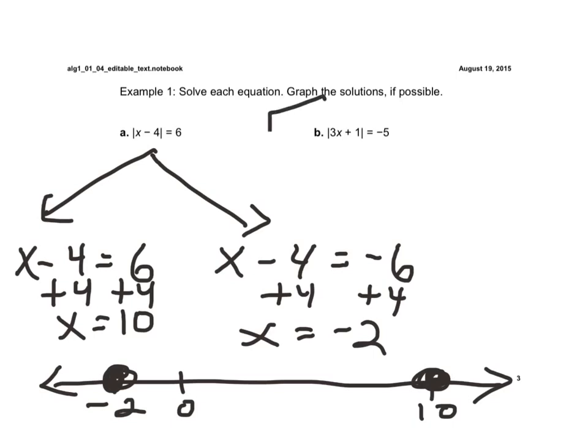If you take a look at b, you've got to be excited about this one. Because when you look at it, it's already set equal to a negative number. And based on the rule that we talked about on the previous slide, when the absolute value, which always must be positive, is set equal to a negative number, it can't be solved. The answer is no solution.